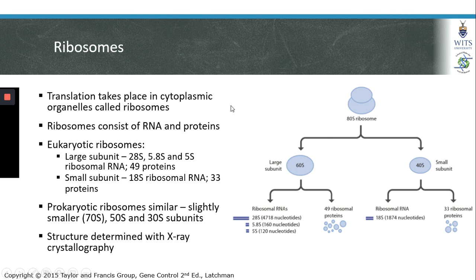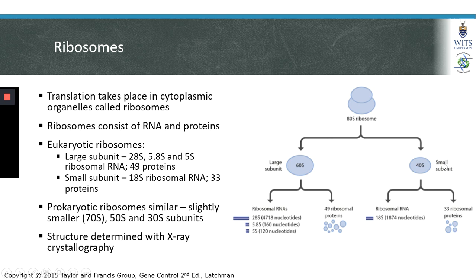Translation takes place in cytoplasmic organelles called ribosomes, which consist of both RNA and proteins. Ribosomes can float freely in the cytoplasm or be associated with the rough endoplasmic reticulum. The 80S ribosome is named based on its electrophoretic mobility and is composed of two major subunits. In eukaryotes, the large 60S subunit is composed of 28S, 5.8S, and 5S ribosomal RNAs as well as 49 ribosomal proteins. The small 40S subunit is composed of an 18S ribosomal RNA and 33 ribosomal proteins.